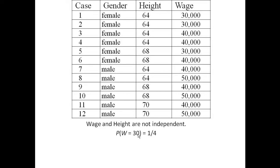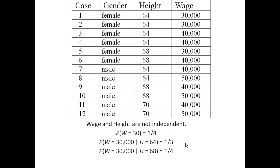The probability of making $30,000 is one-fourth, but the probability of making $30,000 if you're only 64 inches tall goes up — it's bigger than this. The probability of making $30,000 if you're medium height is one-fourth, which is the base value. But the probability of making it if you're tall is zero. So tall people tend to be less likely to make the smaller money and more likely to make the bigger money. So wage and height are definitely not independent.